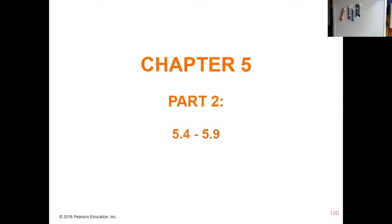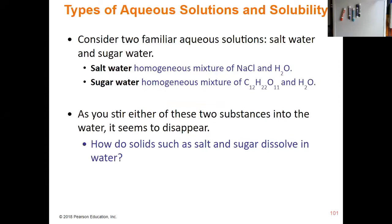Let's look at the last part of chapter five for today. We're going to start by talking about different types of aqueous solutions and how solutions in general dissolve. We have two different types of solutions: solutions of ionic compounds and solutions of molecular compounds. You have to remember the difference between ionic and molecular compounds to really help you focus in on what's happening here.